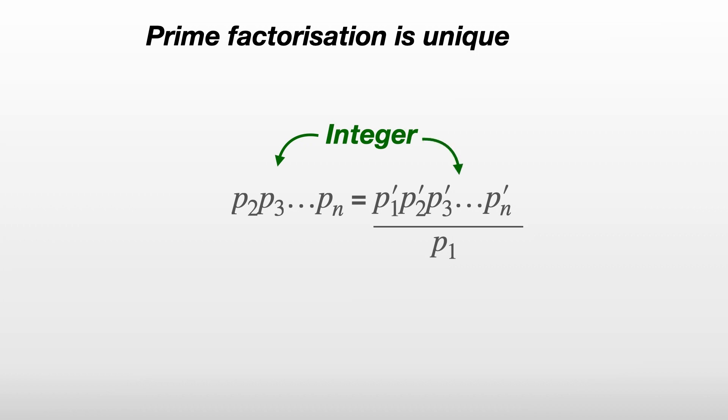But since the p1' to pn' are all prime numbers, we wouldn't get an integer unless one of them is equal to p1. If that doesn't make sense, pause the video and convince yourself that if a product of primes divided by another prime is an integer, then the denominator must also be one of the factors in the numerator. Let's just say p1' is the one that equals p1. It doesn't really matter which one since it could have been any, but let's carry on with the proof.